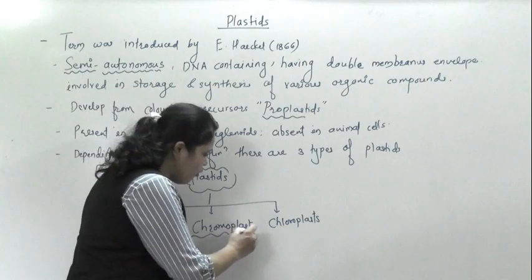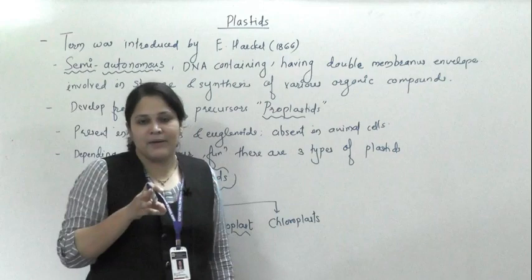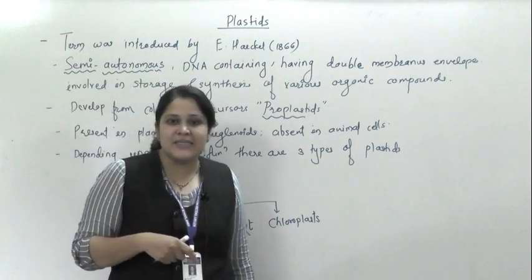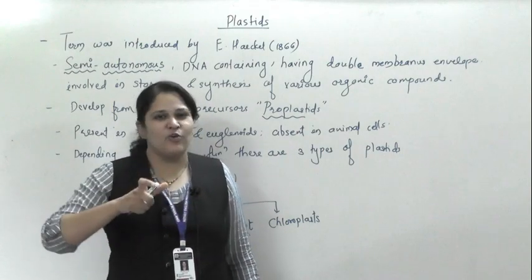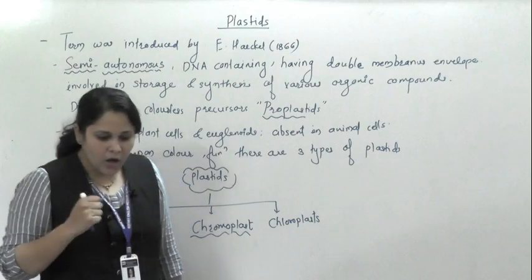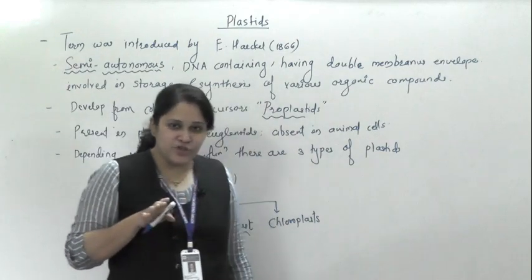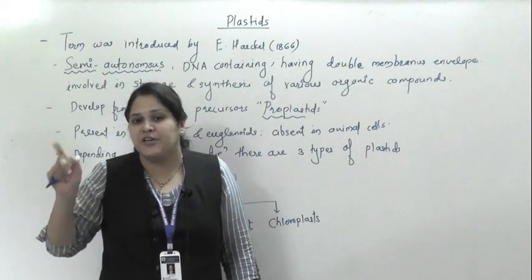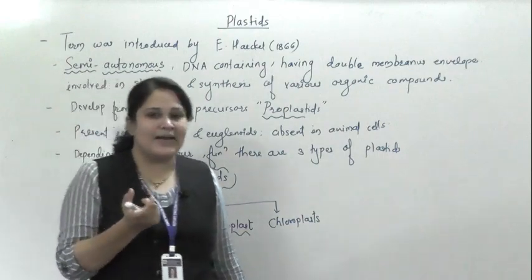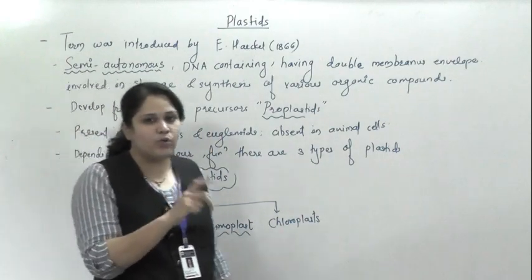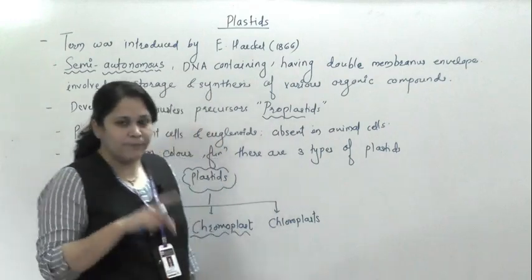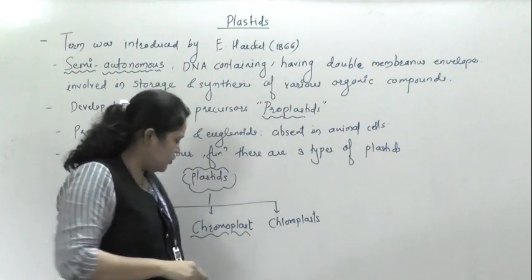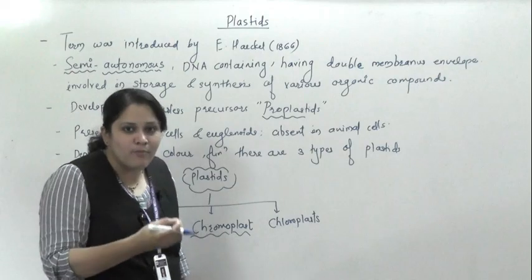The second type is chromoplast. 'Chroma' means color. So these plastids are variously colored, usually ranging from yellowish-orange to red. Many times you have seen a tomato which is green in color — when it is ripe it turns red. What happens exactly at that time is that chloroplasts, which are green colored, get transformed into red or orange colored chromoplasts. So chromoplasts are the plastids which are present in non-green cells. These are your colored plastids.